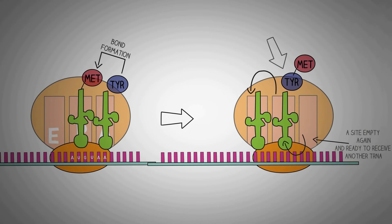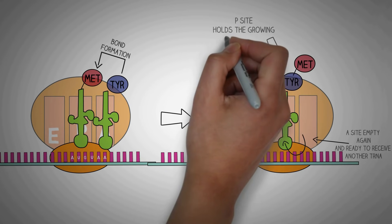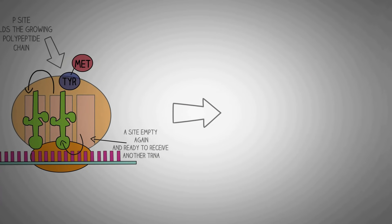So, the P site always holds the growing polypeptide chain. This process is repeated again.